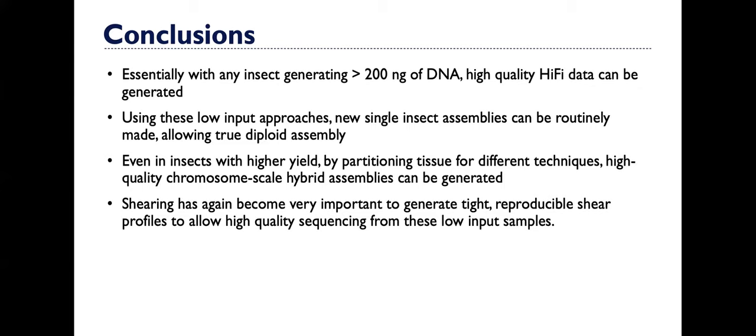Shearing has once again become very important to generate tight reproducible shearing profiles to allow this high quality sequencing from these low input samples. So I will say if your shear is not consistent and within the range that you need, if you have a lot of shouldering on the side, you're going to get a lot of your reads coming from smaller fragments or they're going to be so long that they potentially might not pass CCS quality filtering for downstream use. So it's critical that you have a shearing approach that can generate these tight fragment profiles.